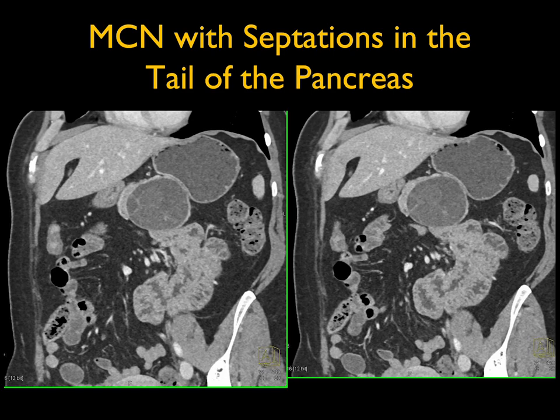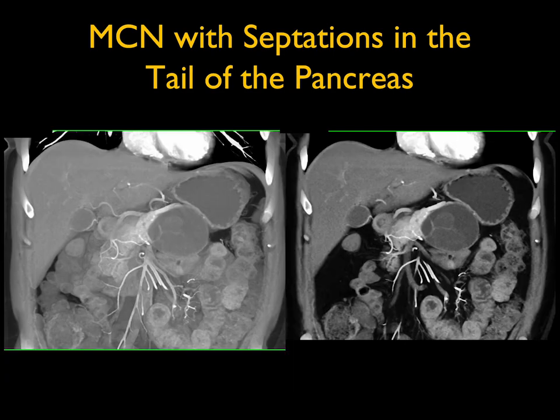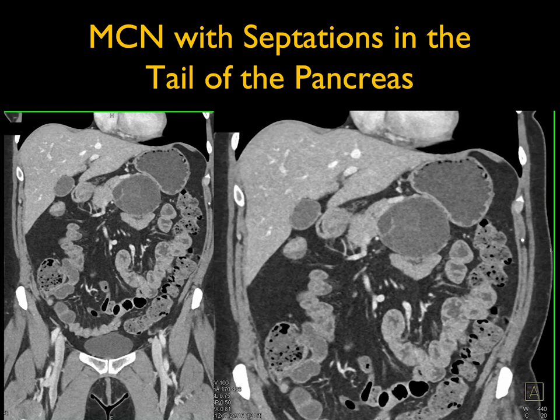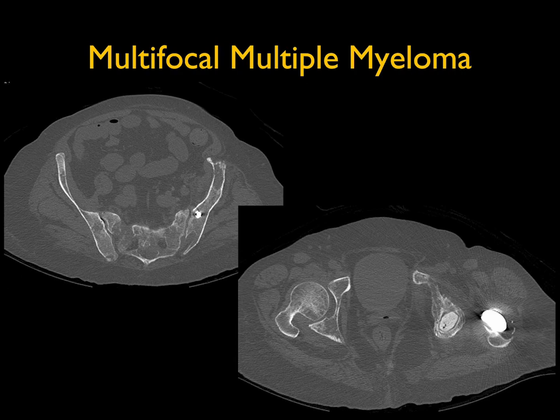A beautiful example of a cystic MCN with thickened septations, great location, no dilated duct, and sometimes distal glandular atrophy. The 3D imaging often shows the septations better. When septations get thicker and the lesion exceeds four centimeters, the likelihood of malignancy increases. This MCN with thick septations and increased density was indeed early malignant.